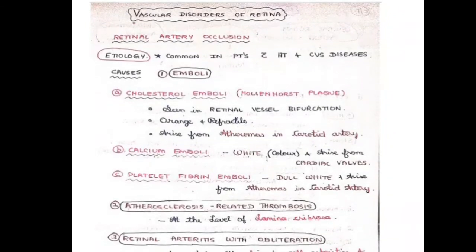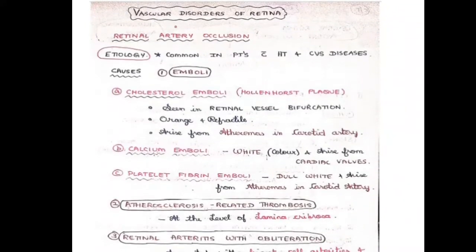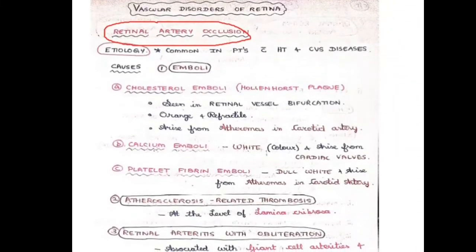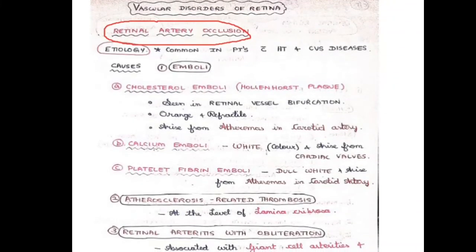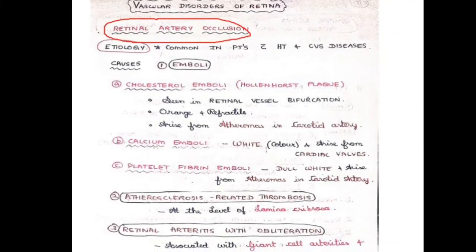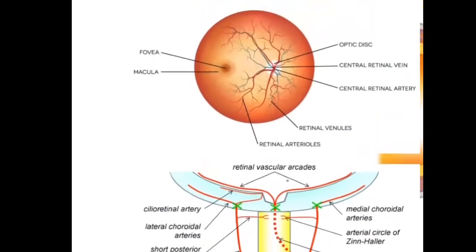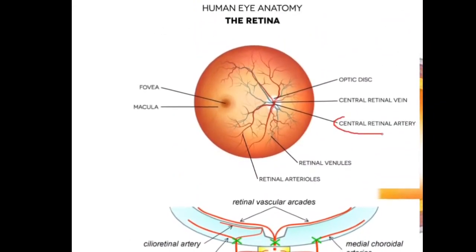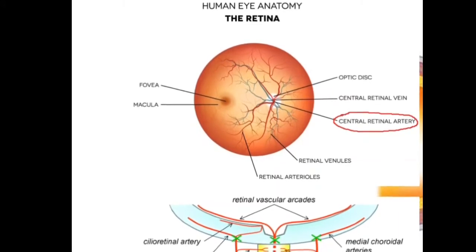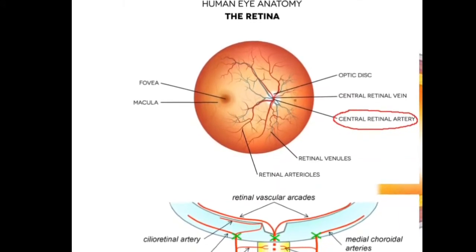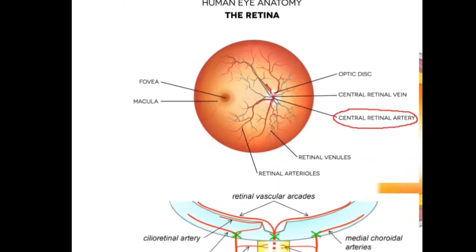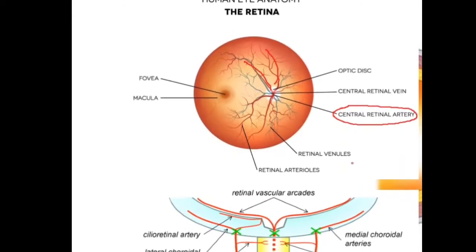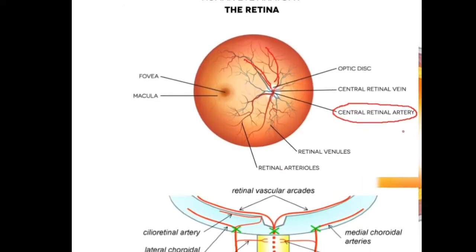Hello friends, today in this video we are going to see about the vascular disorders of retina, specifically retinal artery occlusion. Before going to the topic proper, we will discuss the blood supply of the retina. The main blood supply is from the central retinal artery, along with branch retinal arteries.